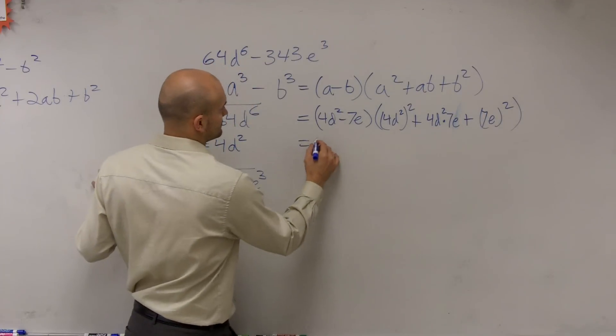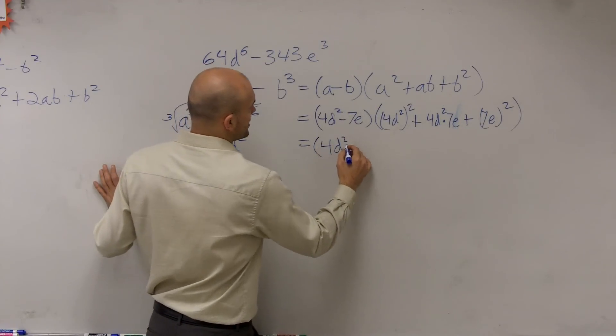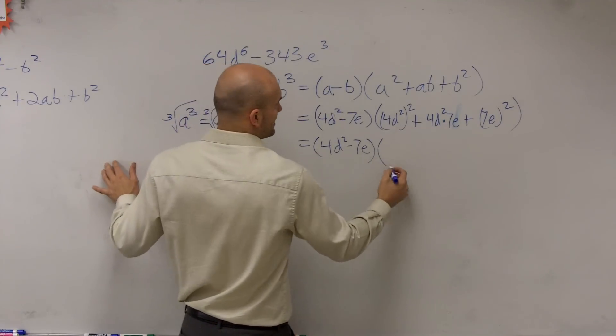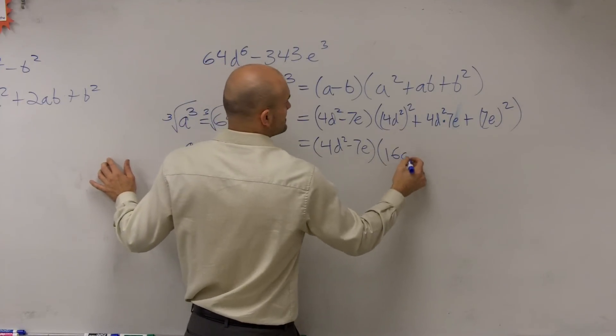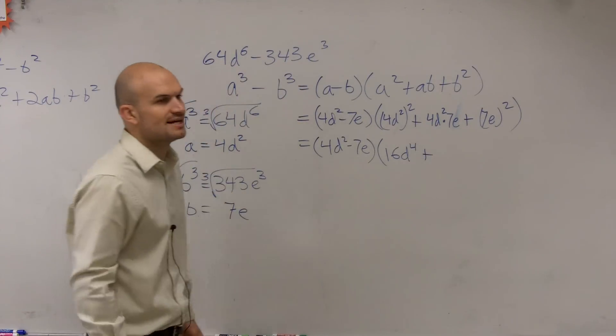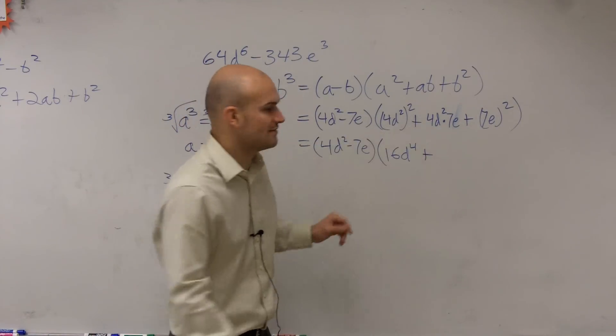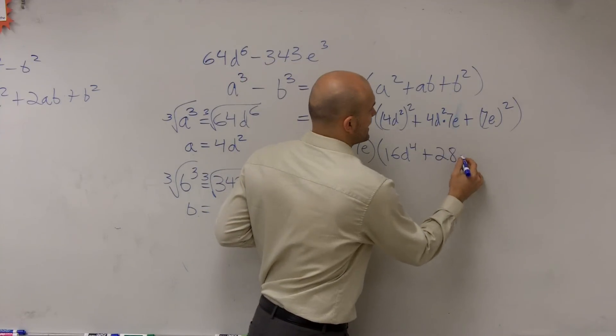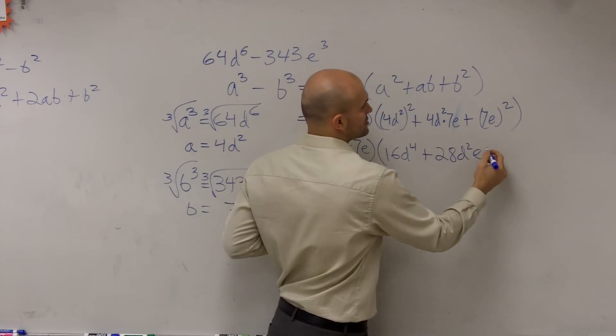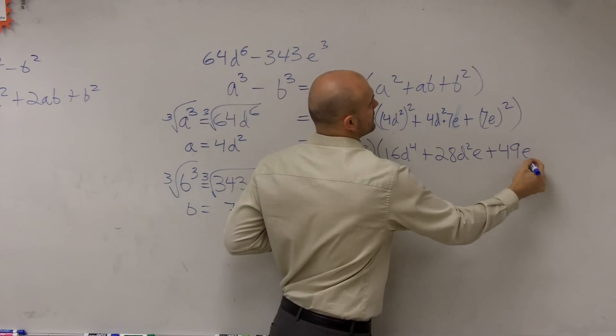Now let's just simplify. 4 d squared minus 7 e, 4 d squared squared is going to be 16 d to the fourth, plus 4 d squared times 7 e. I can multiply the 7 times 4, so I get 28 d squared e, and then 7 e squared is going to be a positive 49 e squared.